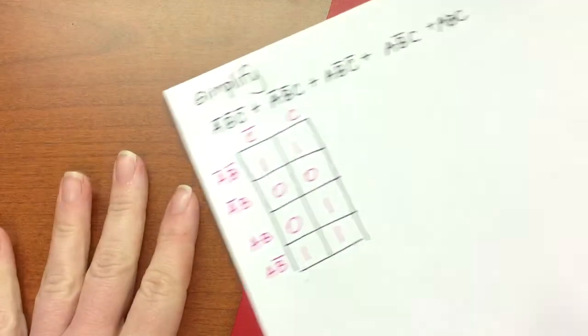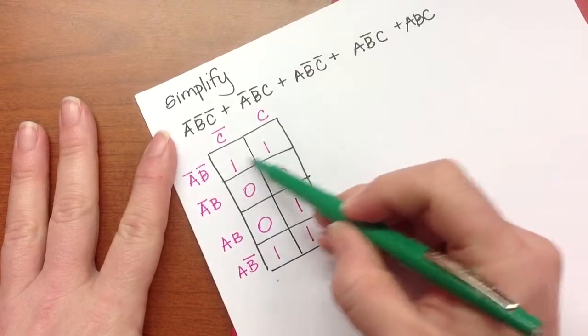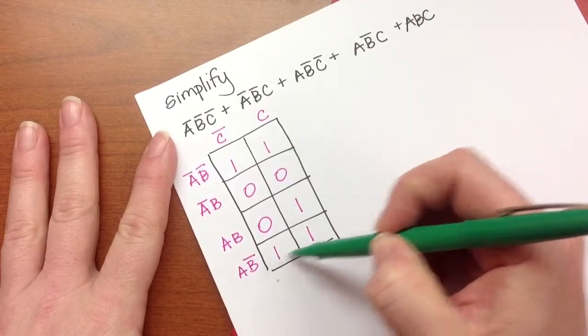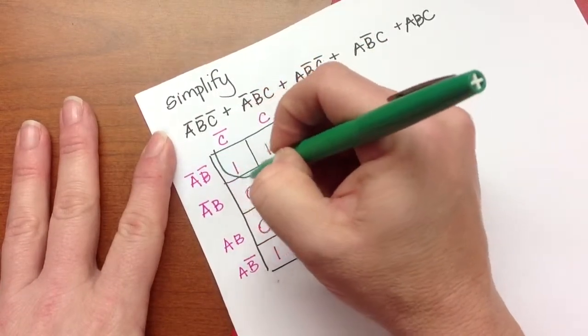So the next thing I want to do then is look for the largest possible group. So there are two here, there are two here, there are two here. But again, this wraps around, so that's actually a group of four, which I prefer.